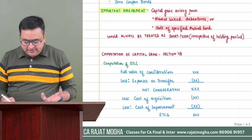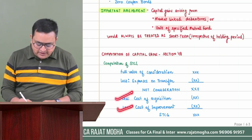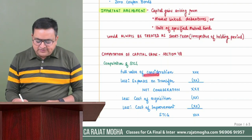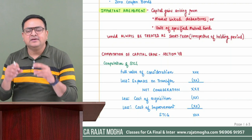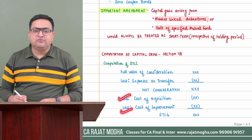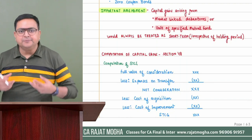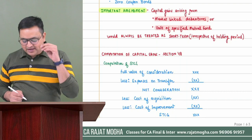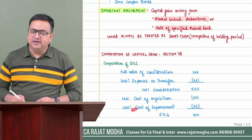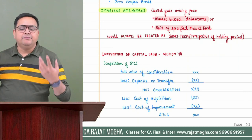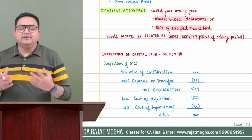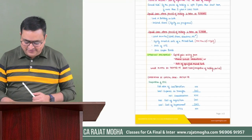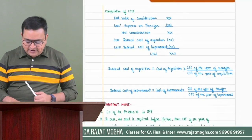The reason for deducting expenses on transfer first is that net consideration plays an important role in sections like 54F. So net consideration is simply the net selling price — whatever you sold the asset for, minus any selling expenses. Then you deduct cost of acquisition and cost of improvement to arrive at capital gain. This formula gives you short term capital gain.